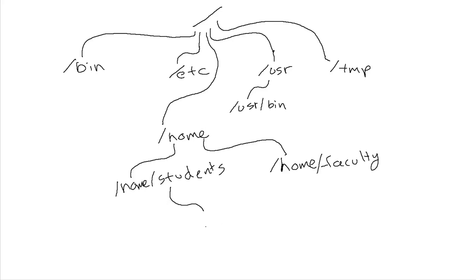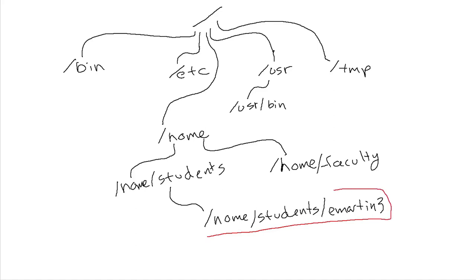If your name is Elizabeth Martin, your home directory will be based off of your net ID. Your full home directory might be something like /home/students/emartin3. This directory is where all of your stuff goes, and it's part of this larger directory structure. It's recursive — every directory has a parent directory except for slash, which is the root of everything. To get to your home directory, you start in slash, go to home, then students, then your username directory.